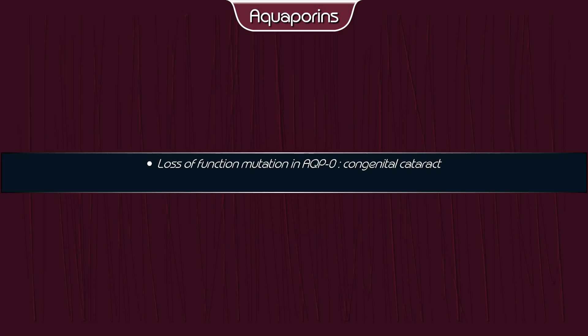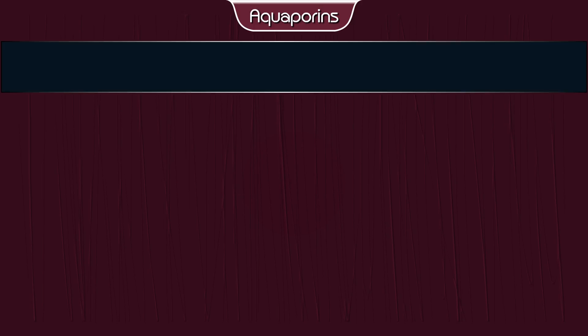Important points to note: Loss of function or mutation in Aquaporin 0 leads to congenital cataract. Loss of function or mutation in Aquaporin 2 leads to nephrogenic diabetes insipidus.